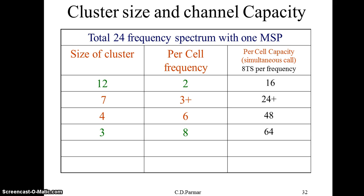You have seen that in one cluster there may be seven cells, four cells, three cells, twelve cells, and so on. We take this example considering one mobile service provider has purchased 24 frequency spectrum from the government. If we take a 12-cell cluster, that means 24 divided by 12, so each cell will have two frequencies, and with eight time slots we can say 16 users can communicate in a particular cell.